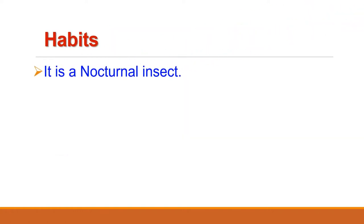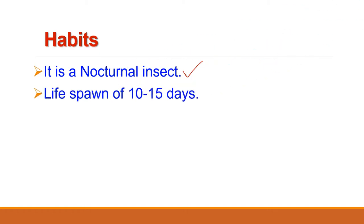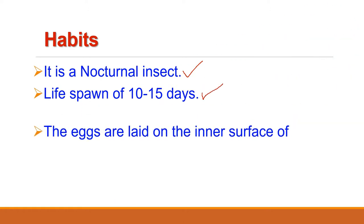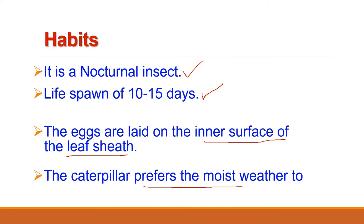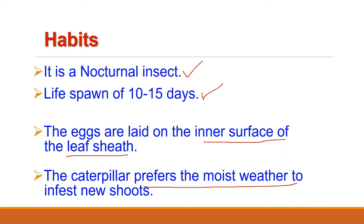Regarding habits, it is a nocturnal insect, so it is active at night. Its lifespan is 10 to 15 days. The female insect lays eggs on the inner surface of the leaf sheath, and the caterpillar prefers moist weather to infest new shoots.